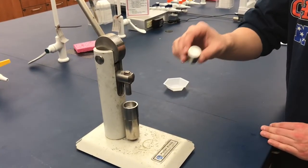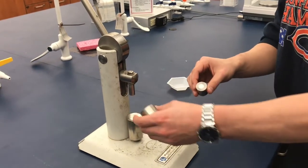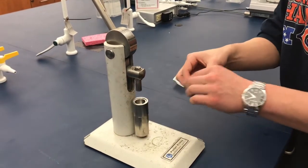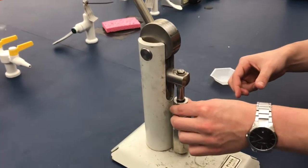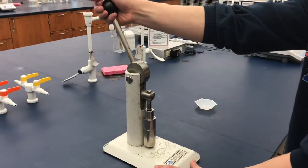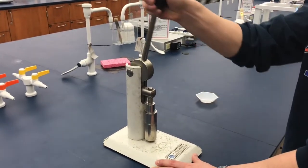If your pellet is stuck, flip tube number one around so that the flat edge is now on the bottom of the pellet press. Push down on the lever again to push the pellet out of the tube.